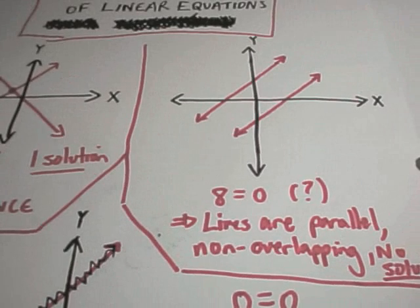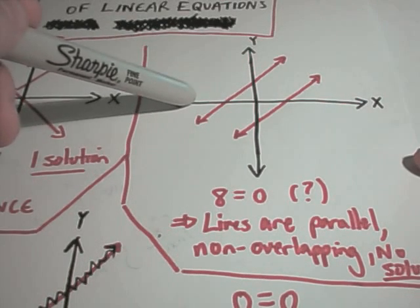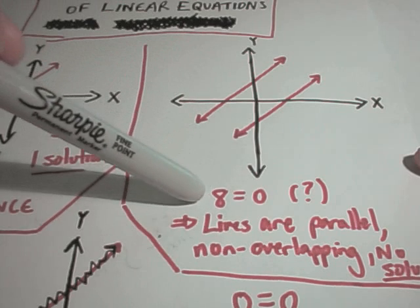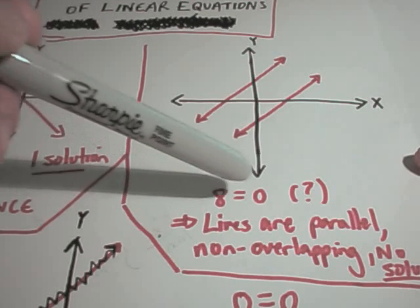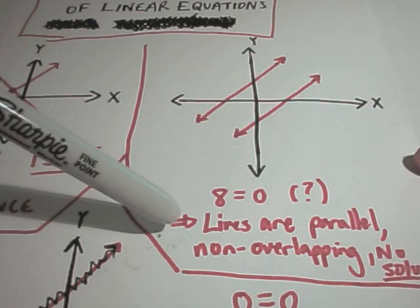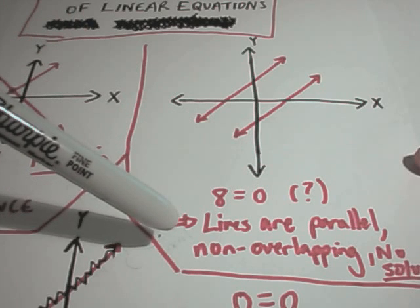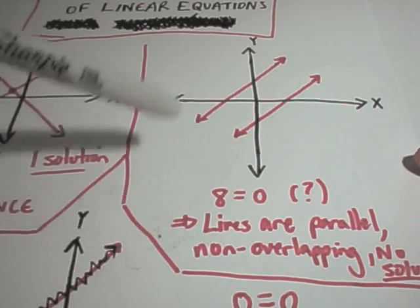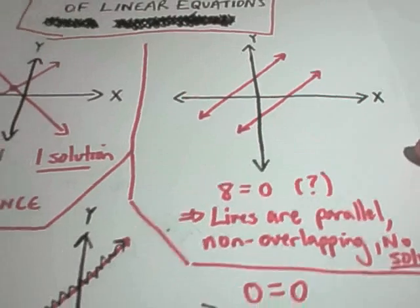The other thing that could happen is the lines could be parallel, and eventually you'll get some sort of nonsensical statement like 8 equals 0. And while that never happens, and what that's indicating is that your lines are parallel, which means that, in this case they're parallel and non-overlapping so that there's no solutions.